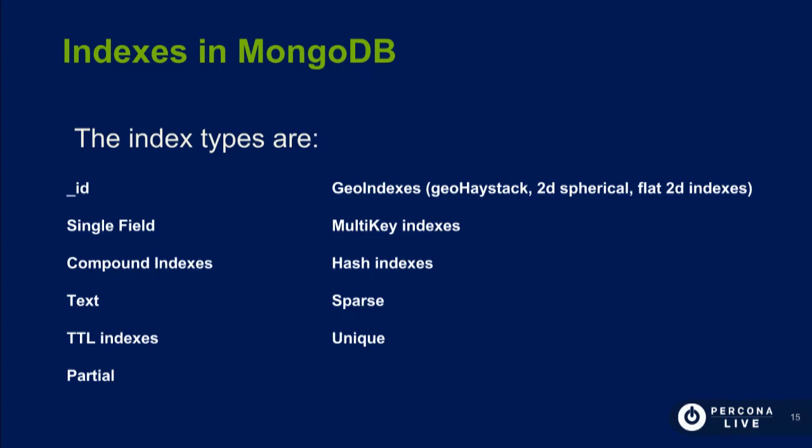MongoDB has a lot of different index types. The _id field is the primary key. We have single field — just one field. Compound indexes — more than one field. Text indexes — it's not like Lucene, it's just basic text, not a full-text search. We also have TTL, partial index, and a lot of different geo indexes. Multi-key indexes, hash indexes, sparse, and unique.